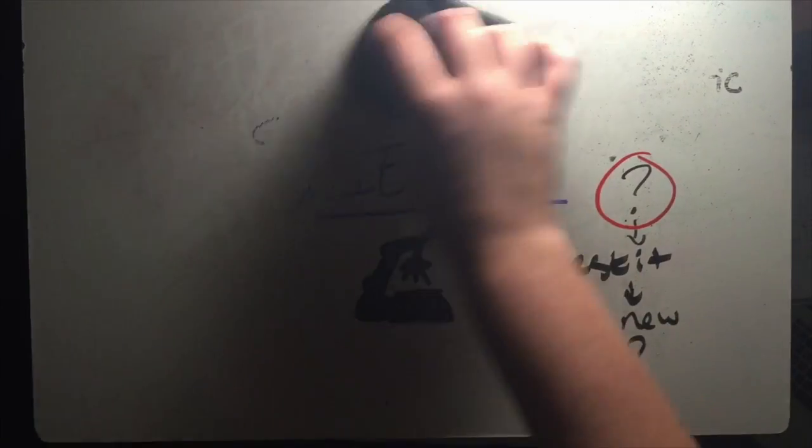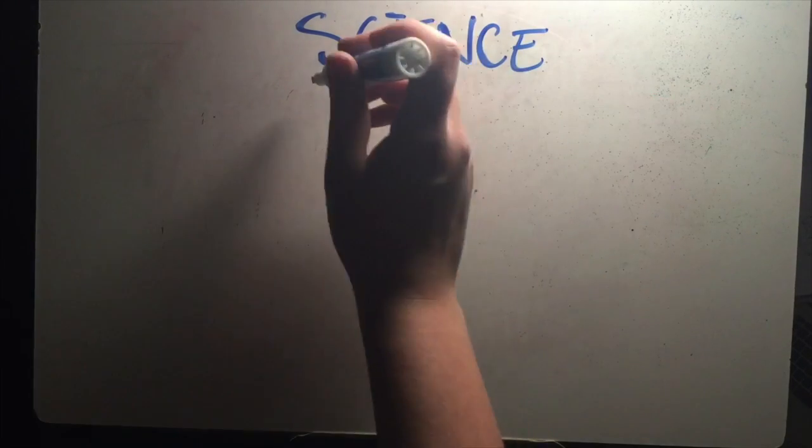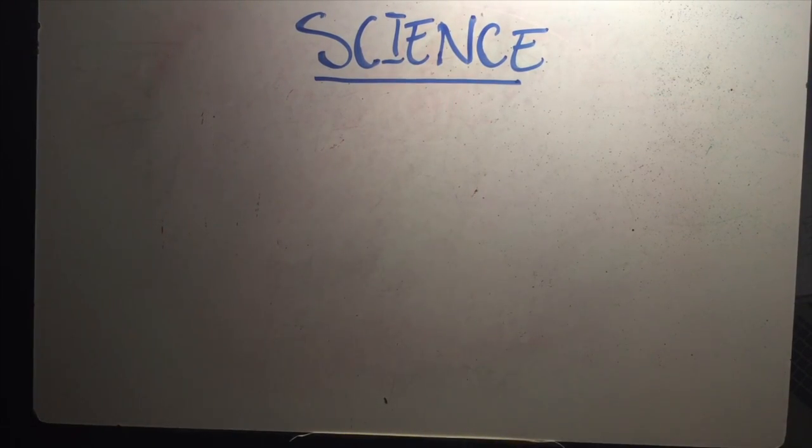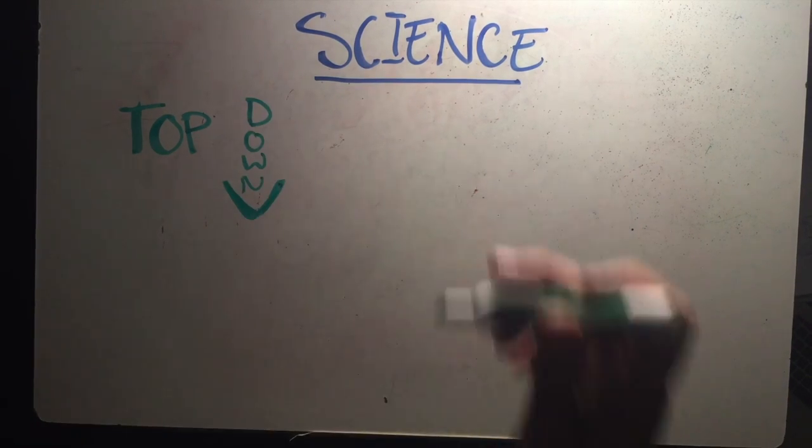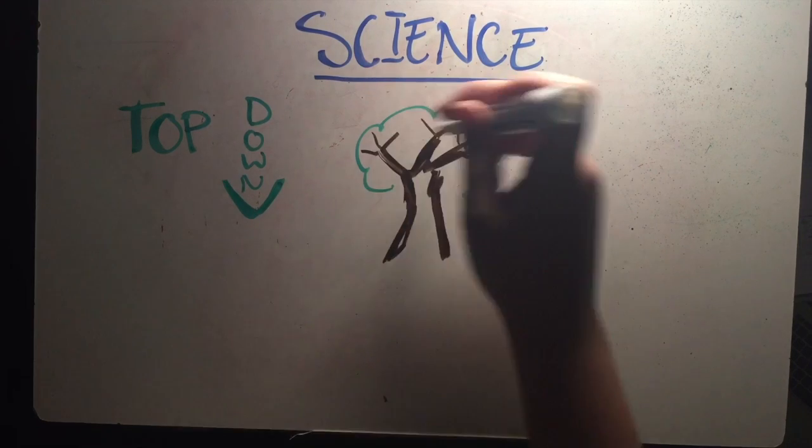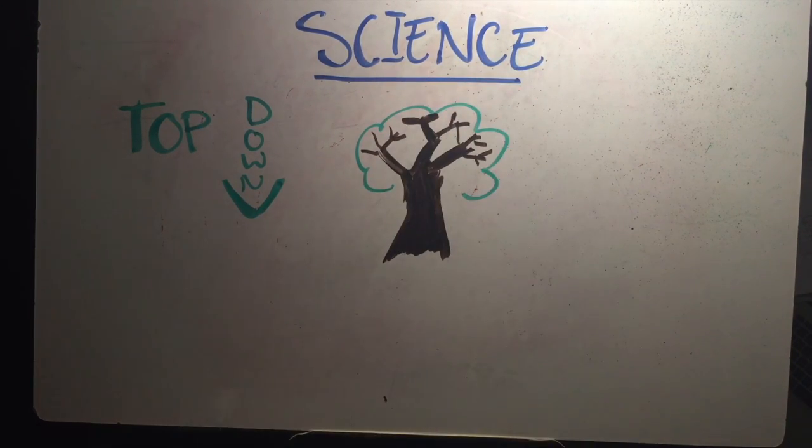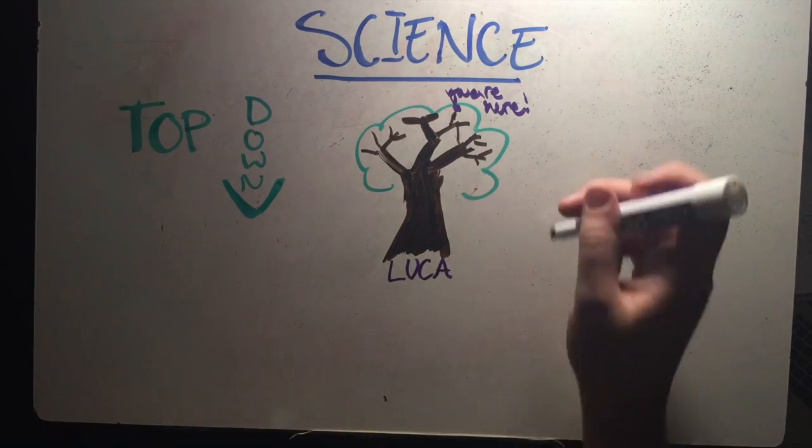In research on the origins of life, there are two main ways that scientists employ the scientific method. The first is the top-down method. This method relies on the analysis of the tree of life and the many types of similarities and differences between all organisms in the tree. The most recent organisms are at the very tips of the branches.